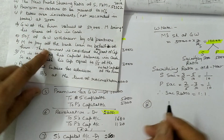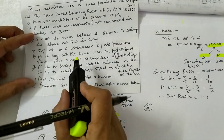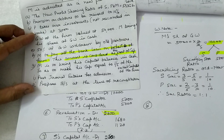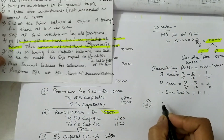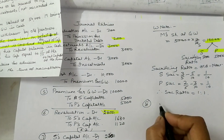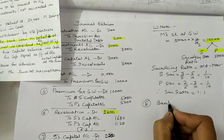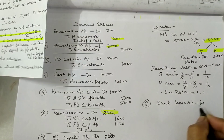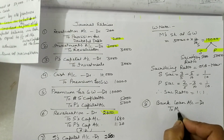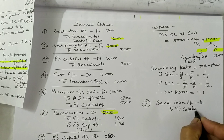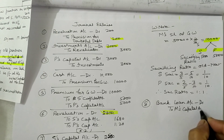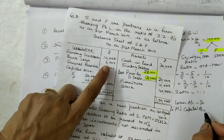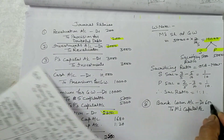Entry 8: M is to pay the bank loan on behalf of the firm, and this amount is considered as part of his capital. The liability is decreasing, so Bank Loan Account is debited to M's Capital Account. The amount of bank loan is 6,000, so the entry is 6,000 and 6,000.